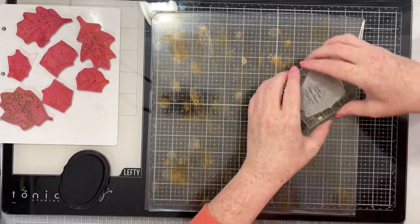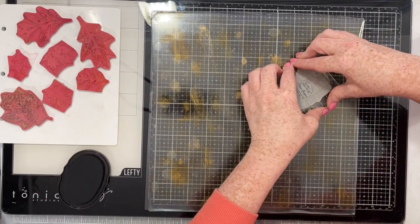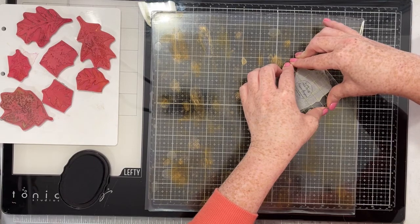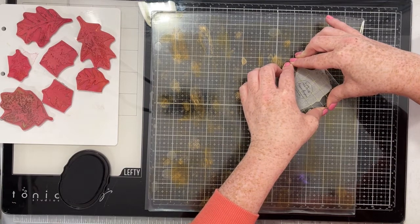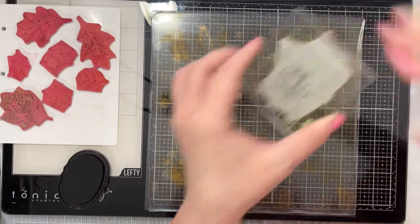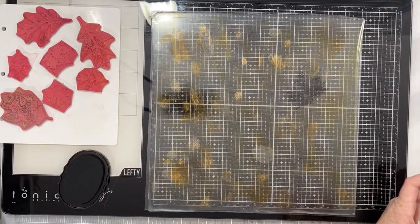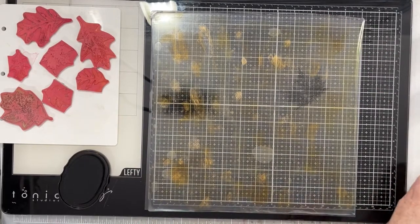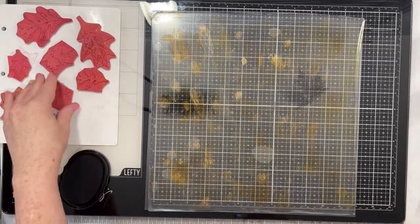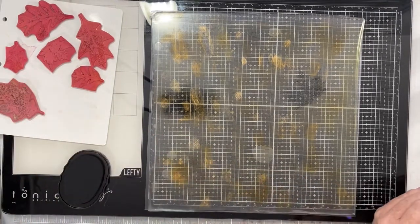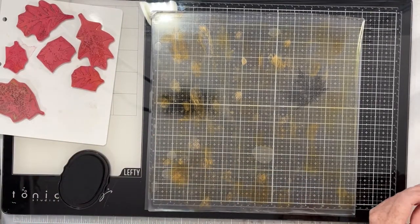Once I had it dry, I took my stamps and a permanent black ink. Stays On Ink works for this. Any kind of permanent black ink. Think about the ink you would stamp with if you wanted to color with alcohol markers. That's the type of ink that you need for this technique.